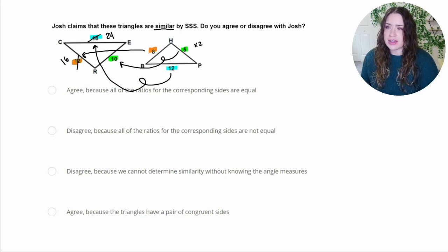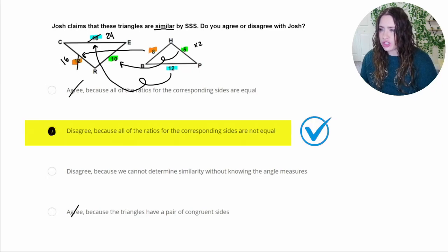So based off of this, the sides are not proportional. So let's see our answer choices and see if anything matches that. First of all, agree. We disagree. These aren't similar. So we can eliminate both of those choices, which leaves these two. Disagree because all of the ratios for the corresponding sides are not equal. We can assume for triangles, if we have three sides that are proportional, that the angles are also going to be proportional. But for sure, the proportions aren't even working for the sides that we have. So we disagree.